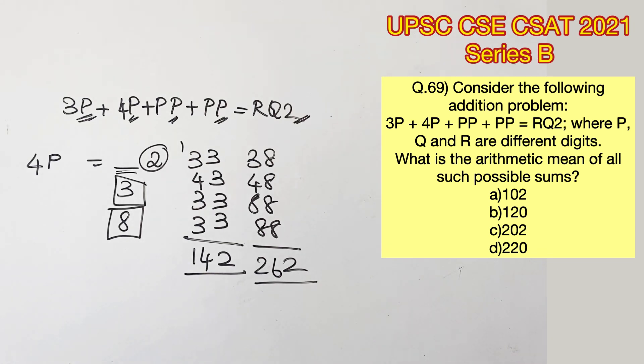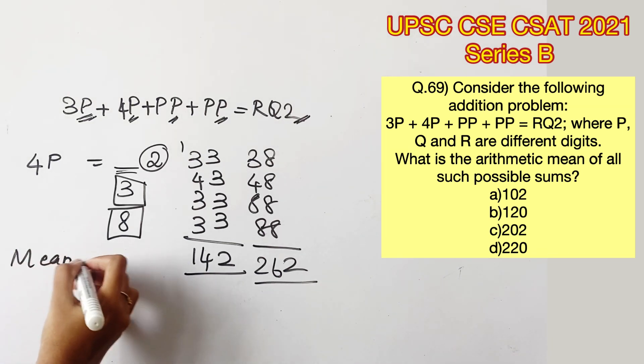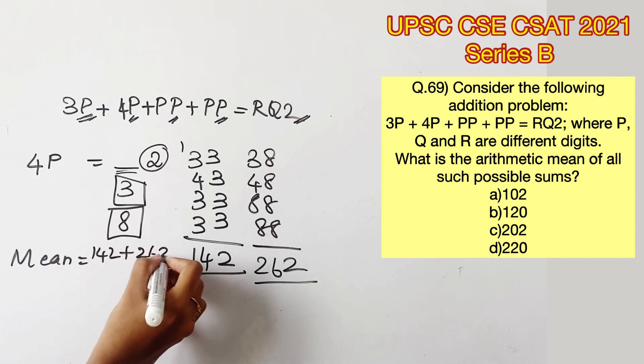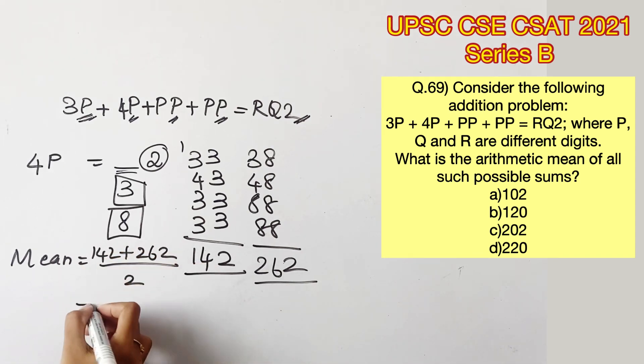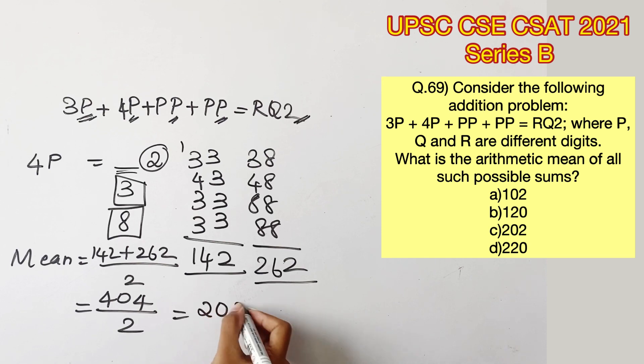Now the question is to find out the arithmetic mean of all the possible sums. We know that arithmetic mean is nothing but the average of the terms. Average is found by the sum of the terms divided by the number of the terms. Since we have 2 terms, we are adding the sum and dividing it by 2, which will give us 404 by 2, which is equal to 202. So option C is the right answer.